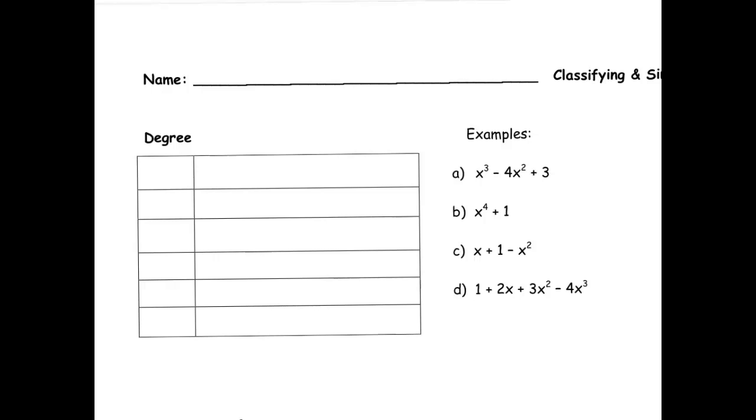So the first one is degree. A degree of a polynomial is really its largest exponent. So I'm actually going to start our table somewhere in the middle here. I'm actually going to start on the third one.